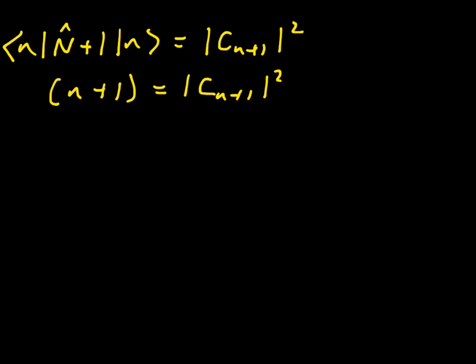If you can't see that immediately, then just split up the N hat plus 1, and you'll end up with bra N, N hat, ket N. That should give you N, and then the bra N ket N should give you a plus 1. So that tells us that C N plus 1 is equal to the square root of N plus 1.